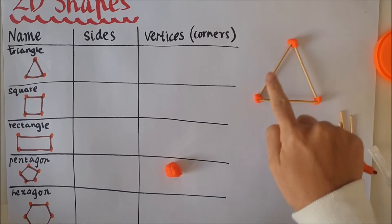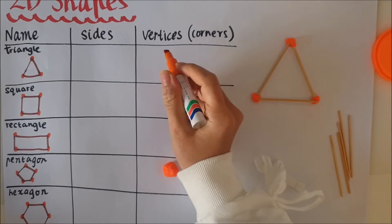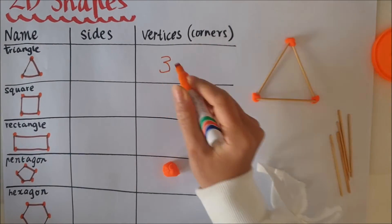Let's have a count. So I've got one, two, three. The triangle has three corners or three vertices.